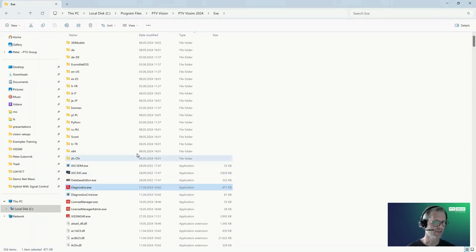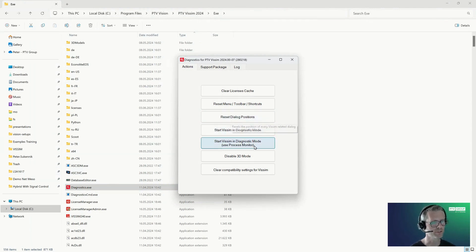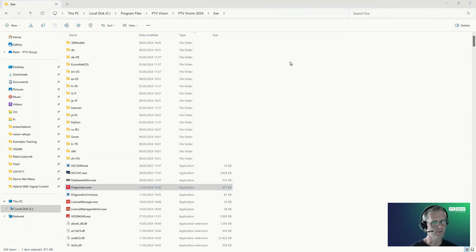Let me show you that. If you go to the place where you have your VISSIM installation and if you go into the exe folder, then you will find the file diagnostic.exe there. If you run it, it comes up with this dialog, and in the middle there's the option 'Start VISSIM in diagnostic mode.' I already did that.